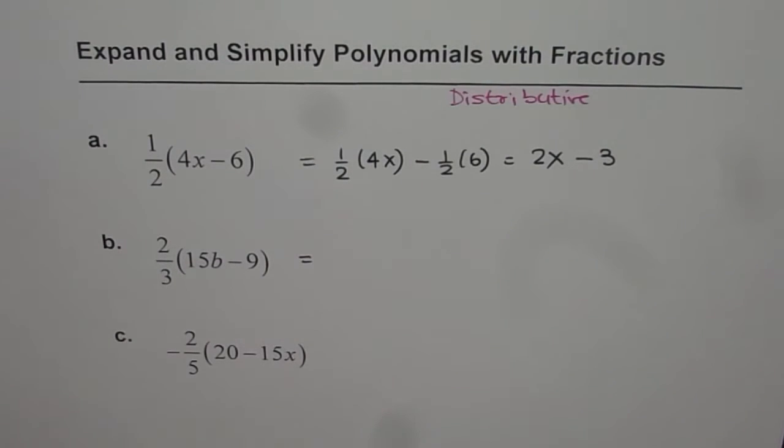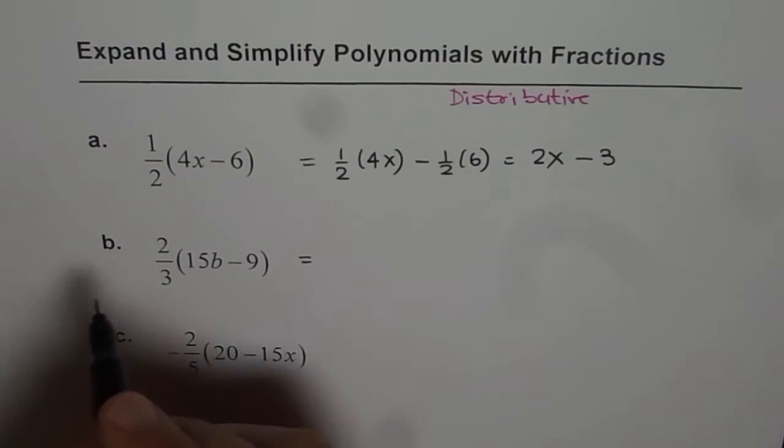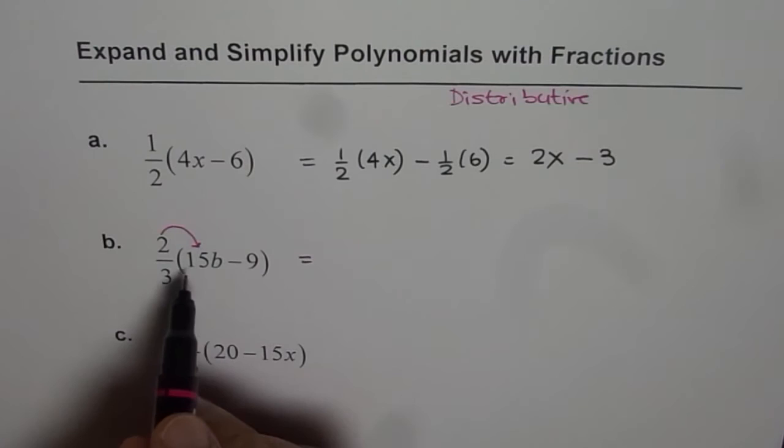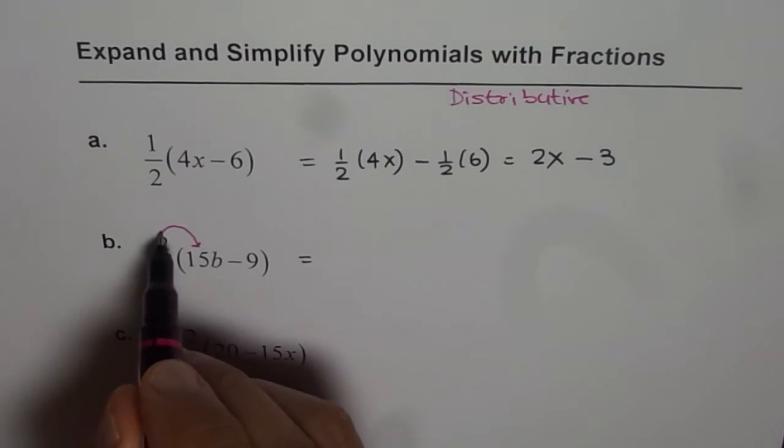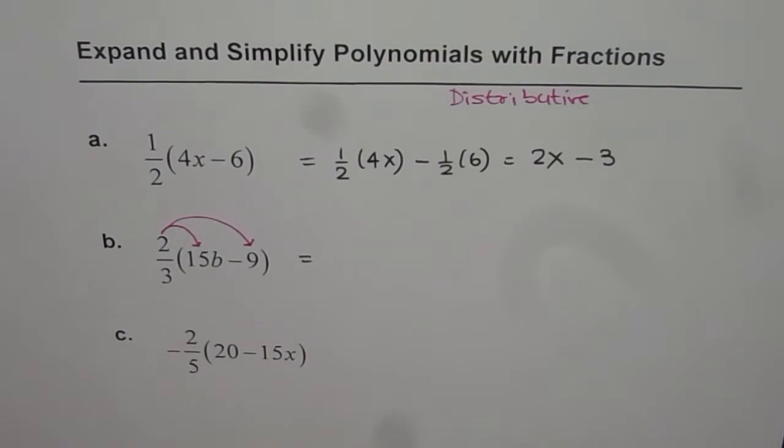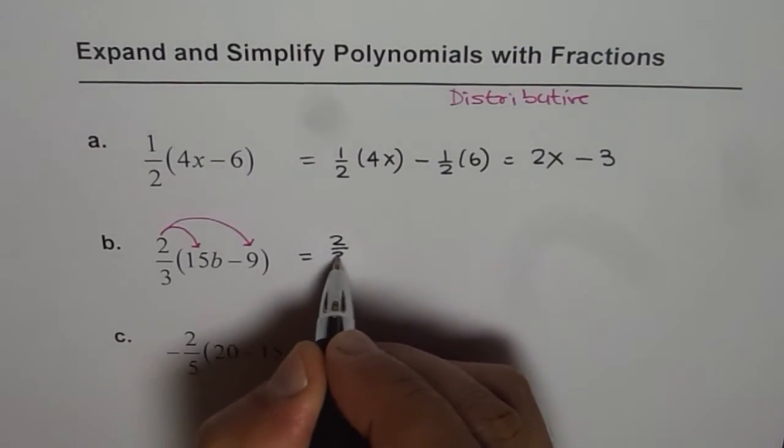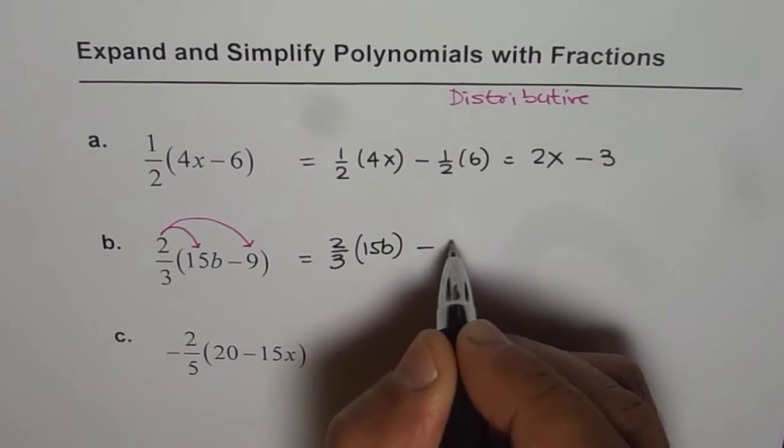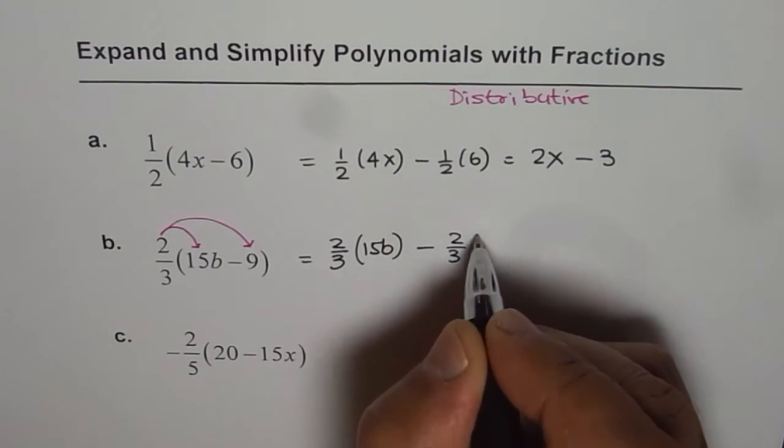So let's again apply the distributive property. That is we'll multiply 15b by 2 over 3 and also minus 9 by 2 over 3. So we get 2 over 3 times 15b minus 2 over 3 times 9.